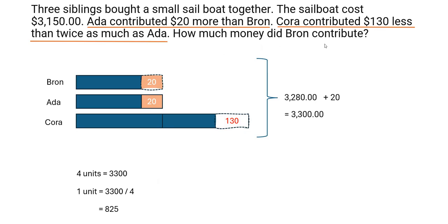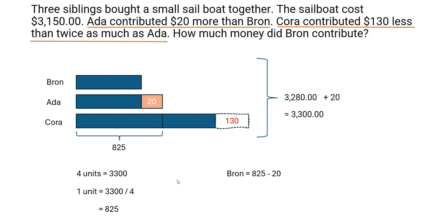Now the question asks how much money did Brawn contribute. The twenty dollars was what we added in — Brawn had only contributed this amount. This whole unit is eight hundred and twenty-five dollars, and if we take away the twenty dollars we will know how much Brawn contributed. So Brawn's contribution is eight hundred and twenty-five minus twenty, which equals eight hundred and five dollars.